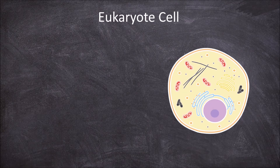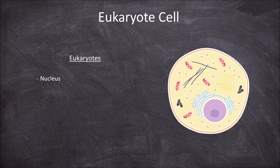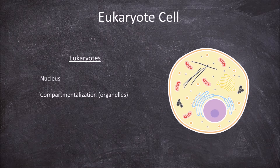In this video we're going to look at the structure and function of a eukaryotic cell. Eukaryotes are organisms that have cells that possess a nucleus. They have a complex structure that has compartmentalisation in the form of organelles. Organelles are membrane bound structures that perform unique functions.